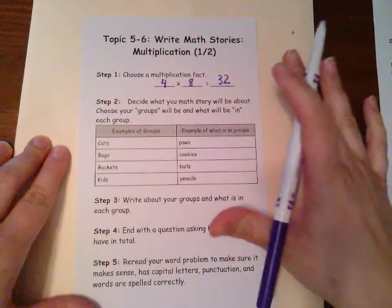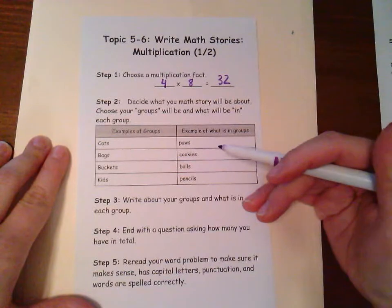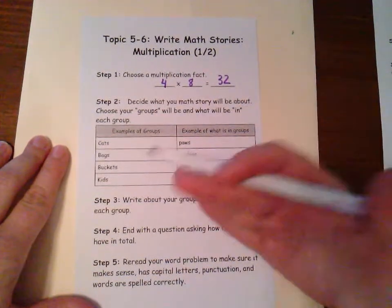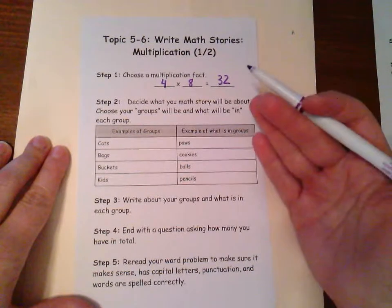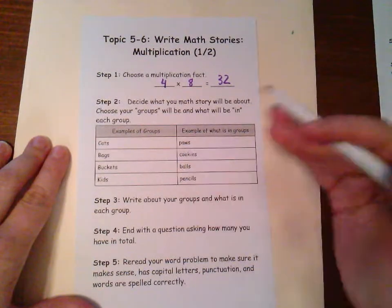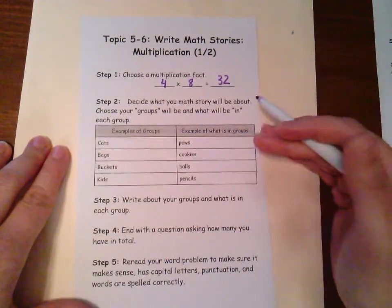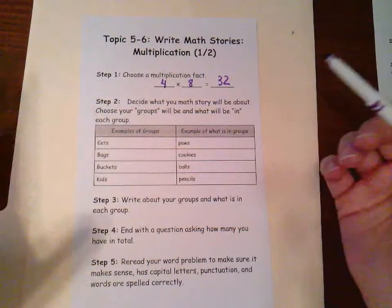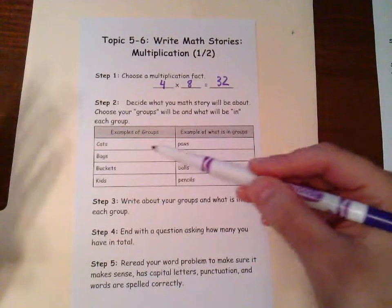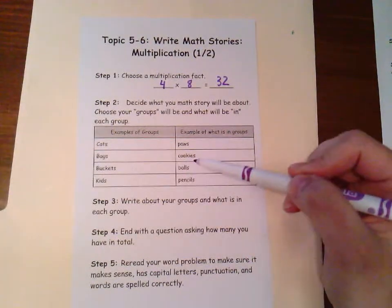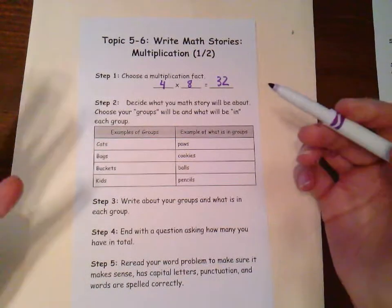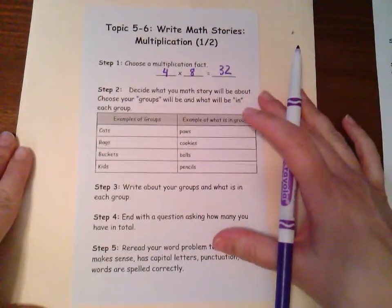So now I have my fact, and now I just have to decide what my story is going to be about. And I got to think about what my groups will be and what I'm going to put in each group. And there are tons and tons of options. I often like to stick to cookies and put them in bags. We can talk about cats who have paws, bags of cookies, you can have buckets with balls in it, kids that have pencils, you can have kids with any type of toy, but the possibilities are really endless.